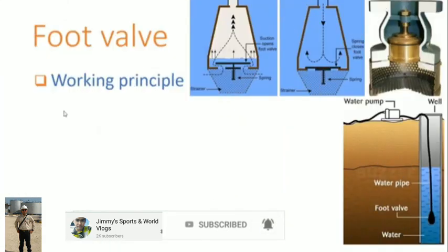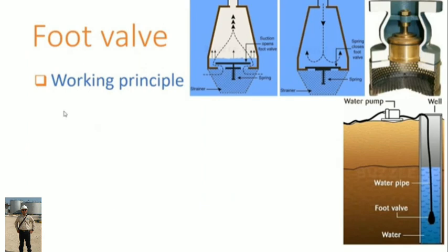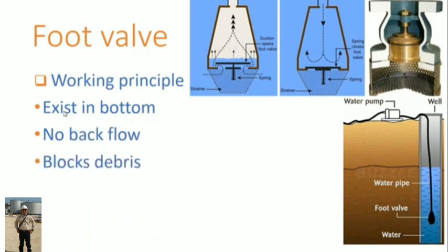Working principle of foot valves. This is also a check valve which is used in the bottom of a pipeline. Usually they are present when water is sucking from a below-level water source. Foot valve prevents the back flow to ease the sucking process, and it also prevents impurities and debris entering to the pipeline.